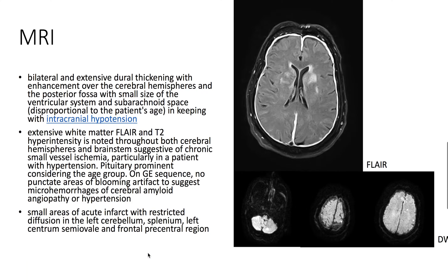Here on MRI, we see that there's bilateral extensive dural thickening with enhancement over the cerebral hemispheres and posterior fossa.